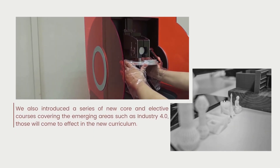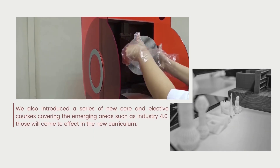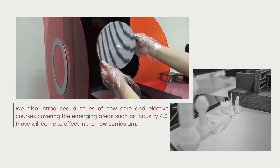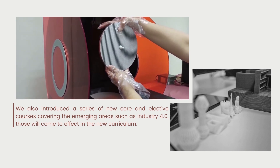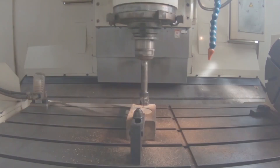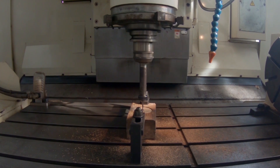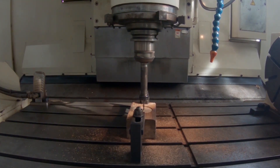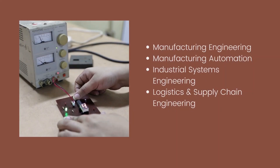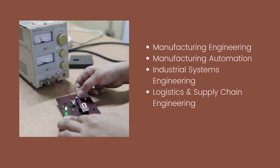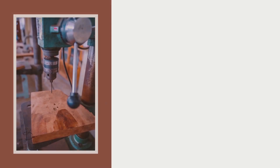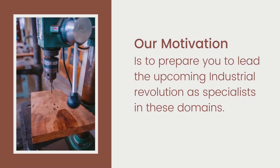We also introduced a series of new core and elective courses covering emerging areas such as Industry 4.0. We are also introducing four sub-streams to provide more flexibility to your studies and grow you as specialists for the sectors demanded by the future industry. The sub-streams are manufacturing engineering, manufacturing automation, industrial systems engineering, and logistics and supply chain engineering. Our motivation is to prepare you to lead the upcoming industrial revolution as specialists in these domains.